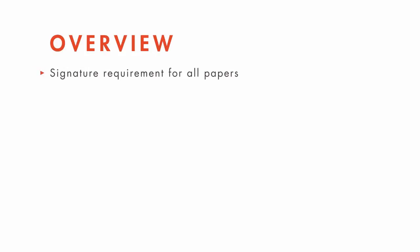Federal Rule 11 fulfills its mission through three distinct but interrelated mechanisms, all of which we'll cover in this tutorial. First, it requires anyone filing a paper with the court — such as a complaint, brief, or motion papers — to sign it, so that the court knows whom to hold responsible for the content of the paper.